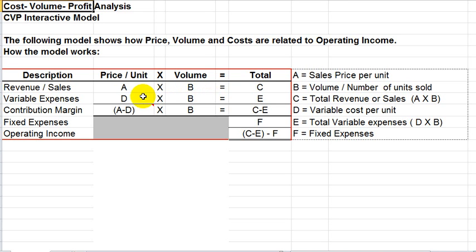The way this model works, let's take it row by row. If we look at revenue and sales, we're looking at the sales price per unit, represented by A here. We multiply that times the volume of the sales or the number of units that were sold, which is B here.